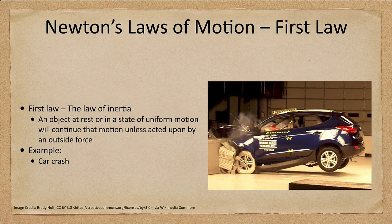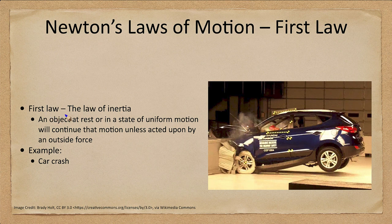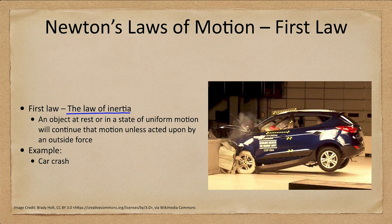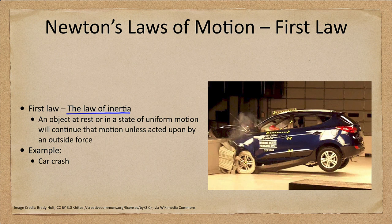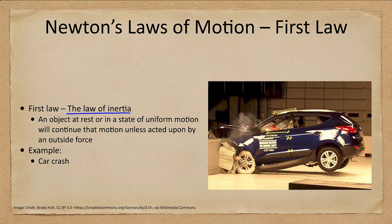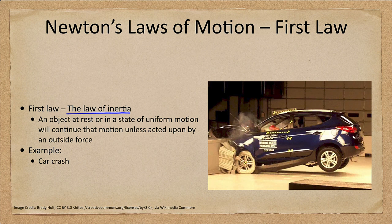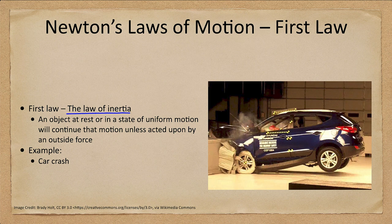So let's start off looking at his laws of motion and he gave us three laws of motion. His first law sometimes called the law of inertia states that an object at rest or in a state of uniform motion will continue that motion unless acted upon by an outside force. So if an object is sitting there it's going to stay sitting there. If an object is moving in a straight line at a constant speed it will continue doing that. So it also means that any object that changes its motion, any object that accelerates, must have an outside force acting upon it.